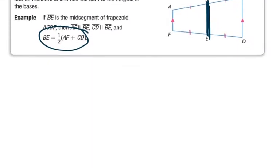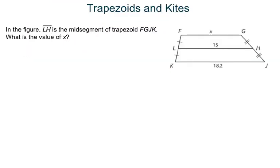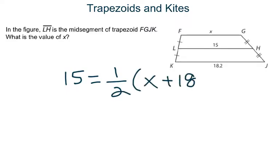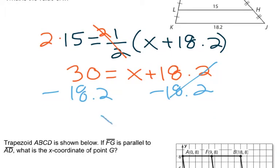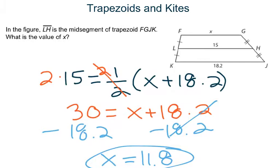In this figure, LH is the midsegment of the trapezoid. What is the value of x? The midsegment equals half the sum of the two bases: 15 = ½(x + 18.2). Multiply both sides by 2 to get 30 = x + 18.2. Subtract 18.2, and x is equal to 11.8.